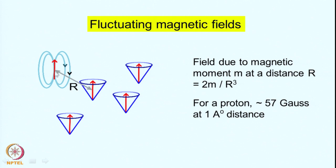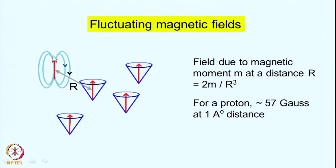Consider an ensemble of spins. Each spin precesses around the magnetic field, distributed on the surface of a cone with random phases. Since each nuclear spin is a magnetic dipole, it produces its own field represented by flux lines. As the spin precesses around the cone, those flux lines also move and oscillate.